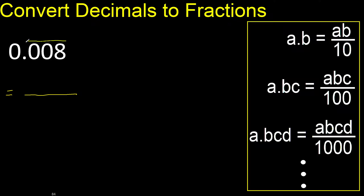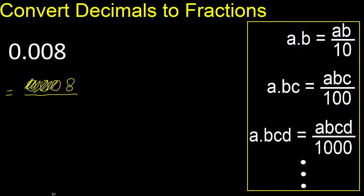First, write all the numbers without the decimal point, like this. Eliminate the zero on this side — always number one. After the point there are three numbers, therefore three zeros.